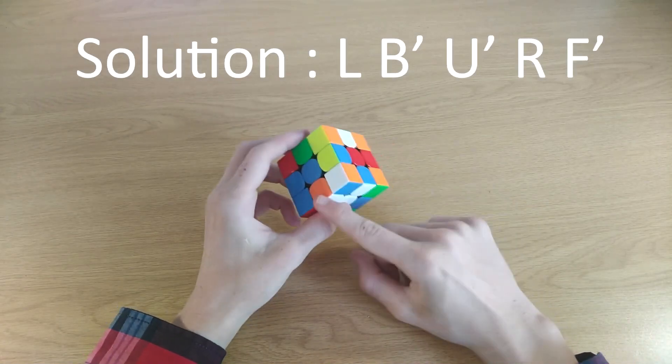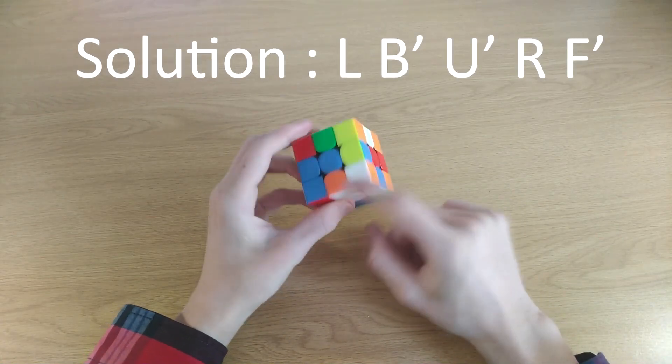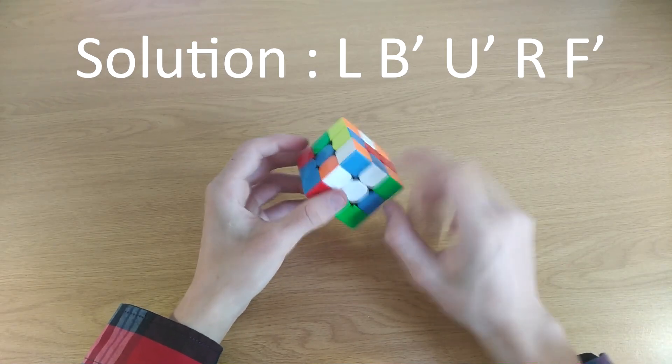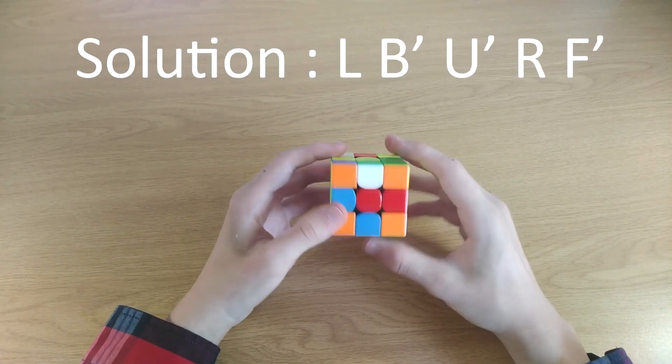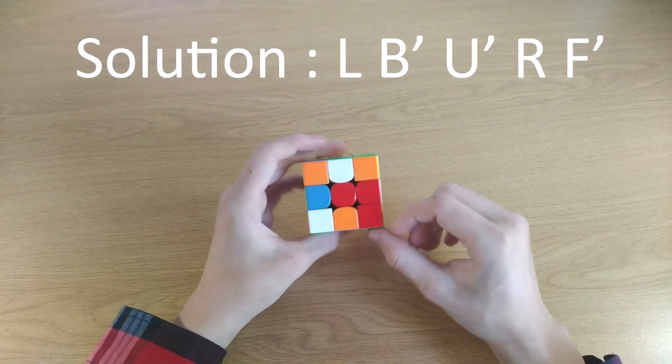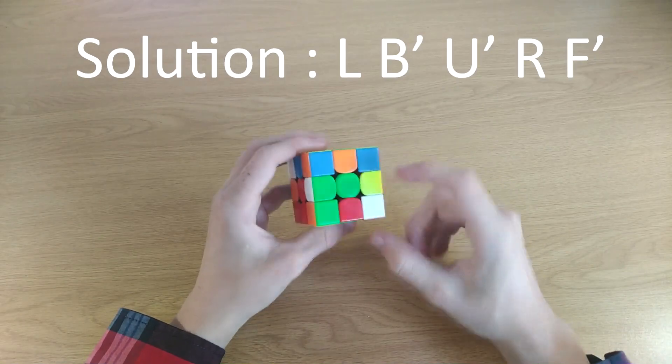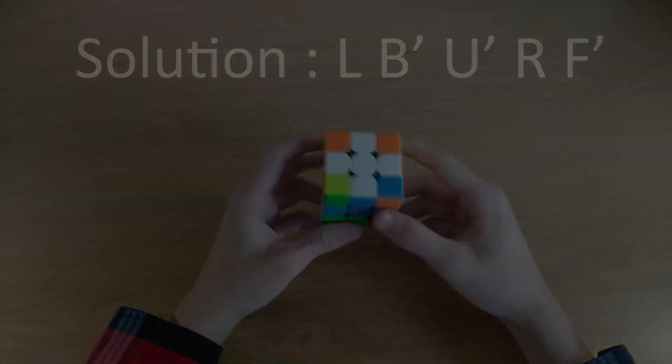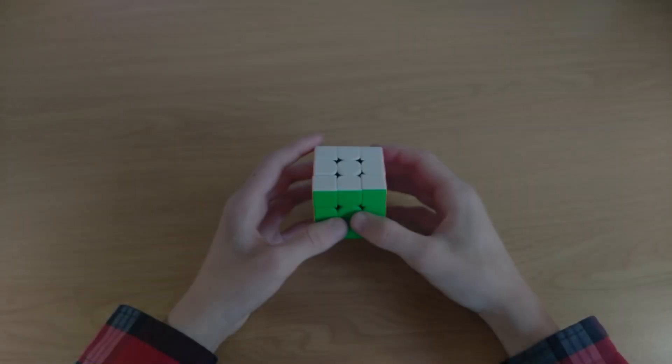Then we can do a B', now these two are in the correct position, these two H pieces. Next, we're going to do a U' like that to align them. Then we can insert this orange piece with an R and then an F' to insert the green piece. Let's go through the last example.